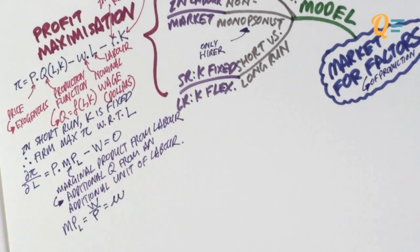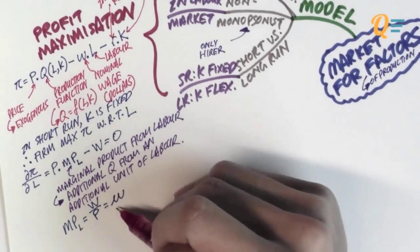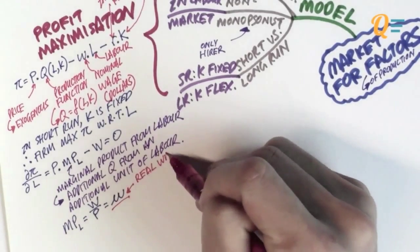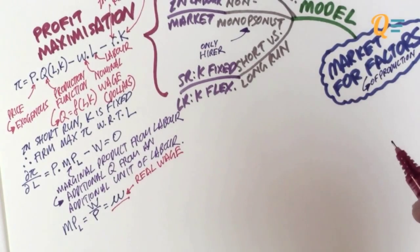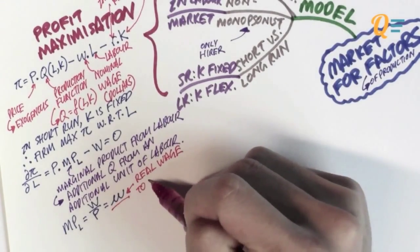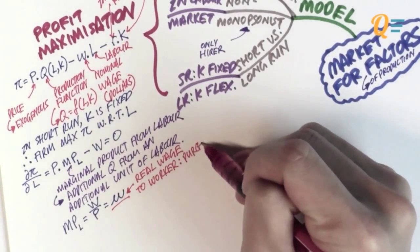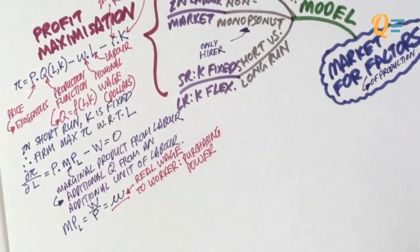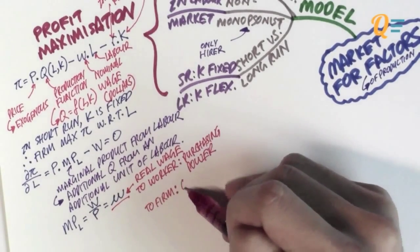I can actually summarise this into the marginal product from labour is equal to the nominal wage divided by price. And the nominal wage divided by price actually gives me this thing called the real wage. What the real wage means to the worker is that this is its purchasing power. We've talked about this in Chapter 2.